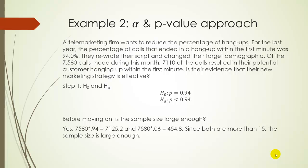For our last example, this is a made-up example, but it might mimic what an actual business might do. But this time, let's do the alpha p-value approach, since I said you could use either procedure. So suppose a telemarketing firm wants to reduce the percentage of people that just hang up within the first minute of a phone call. So for the last year, the percentage of calls that ended up in a hang-up within the first minute, they found was 94%. So they decided to do some changes because they thought 94% was too high. So they decided to rewrite their script and change their target demographics, basically change their marketing scheme. So they monitored the calls over the last month. And there were 7,580 calls made during that month. 7,110 of those calls resulted in the potential customer, or victim, hanging up within the first minute.